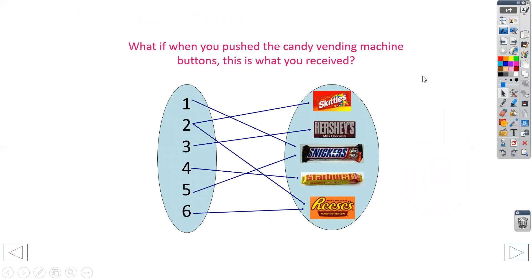But if I looked at this vending machine and I pressed the buttons, what do you notice about it? Well, if I press number one, I got a Snickers. But what happens if I press number two? If I press two, I got two for the price of one because it gave me Skittles and Reese's.